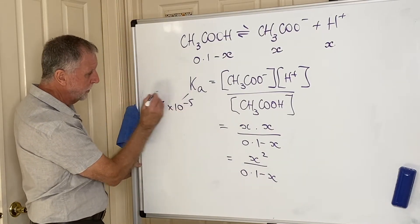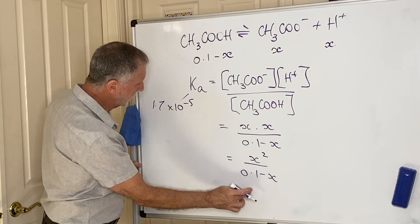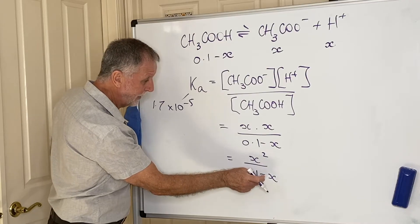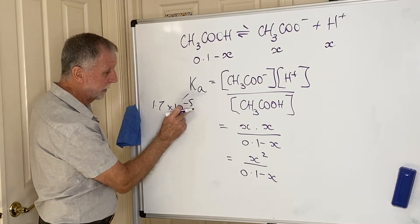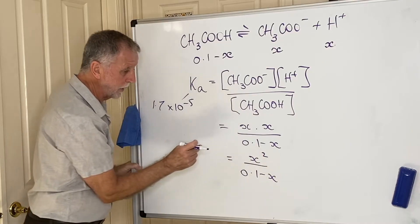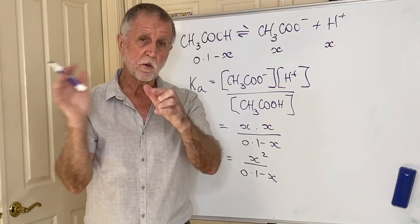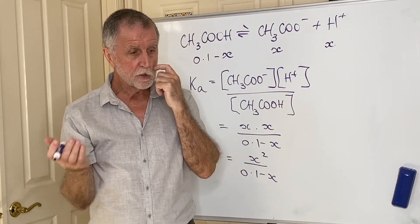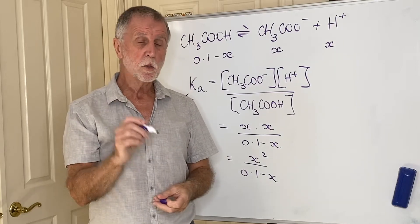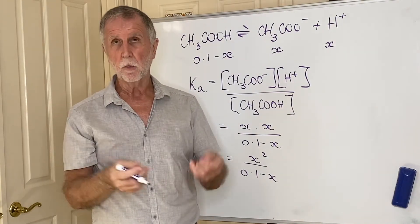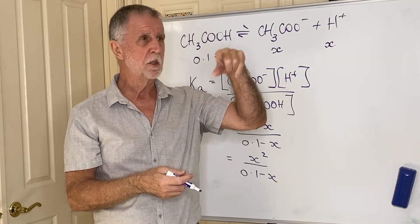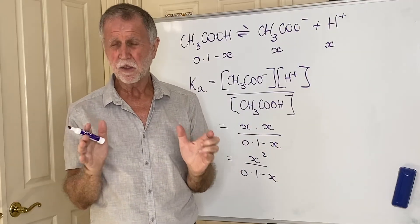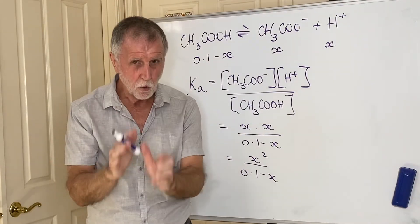If you multiply through, you get a number term of 1.7 × 10⁻⁵ × 0.1, minus an X term of 1.7 × 10⁻⁵ × X, equals X squared. Rearranging everything to one side gives a quadratic equation. The syllabus does not require you to solve quadratics — in maths you'd use the formula (−b ± √(b²−4ac)) / 2a — but in chemistry instead we're going to make an approximation.